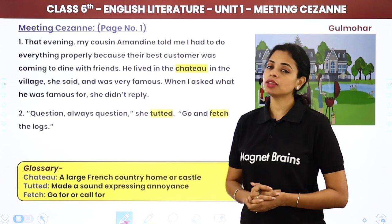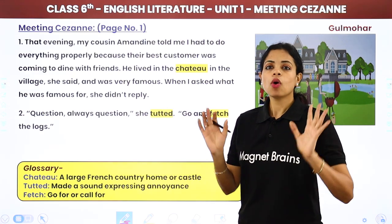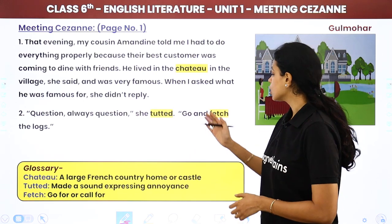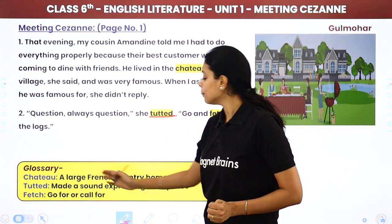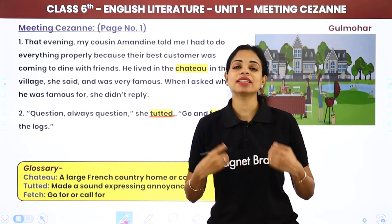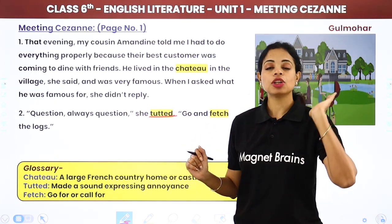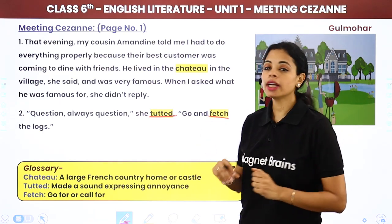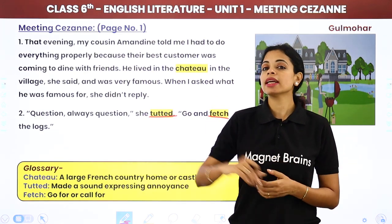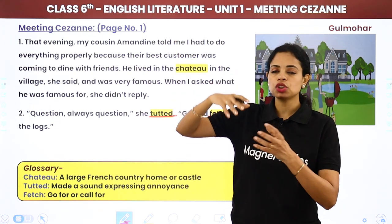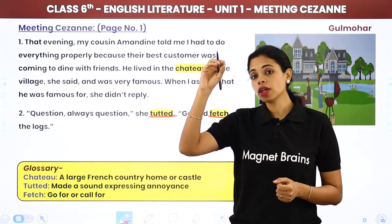When Yannick asked what the man was famous for, Amandine didn't answer. She tutted — meaning she made a disapproving sound — and said, 'Questions, always questions,' and told him to go and fetch the logs. 'Fetch' means to go and look for something and bring it back.